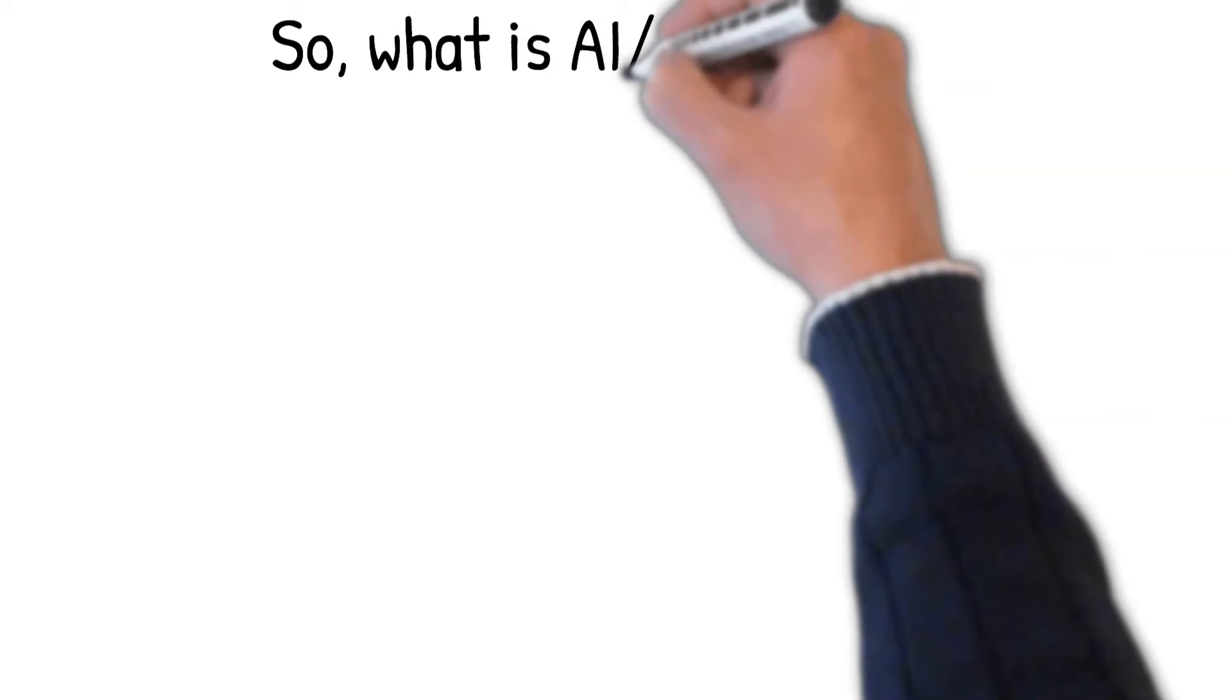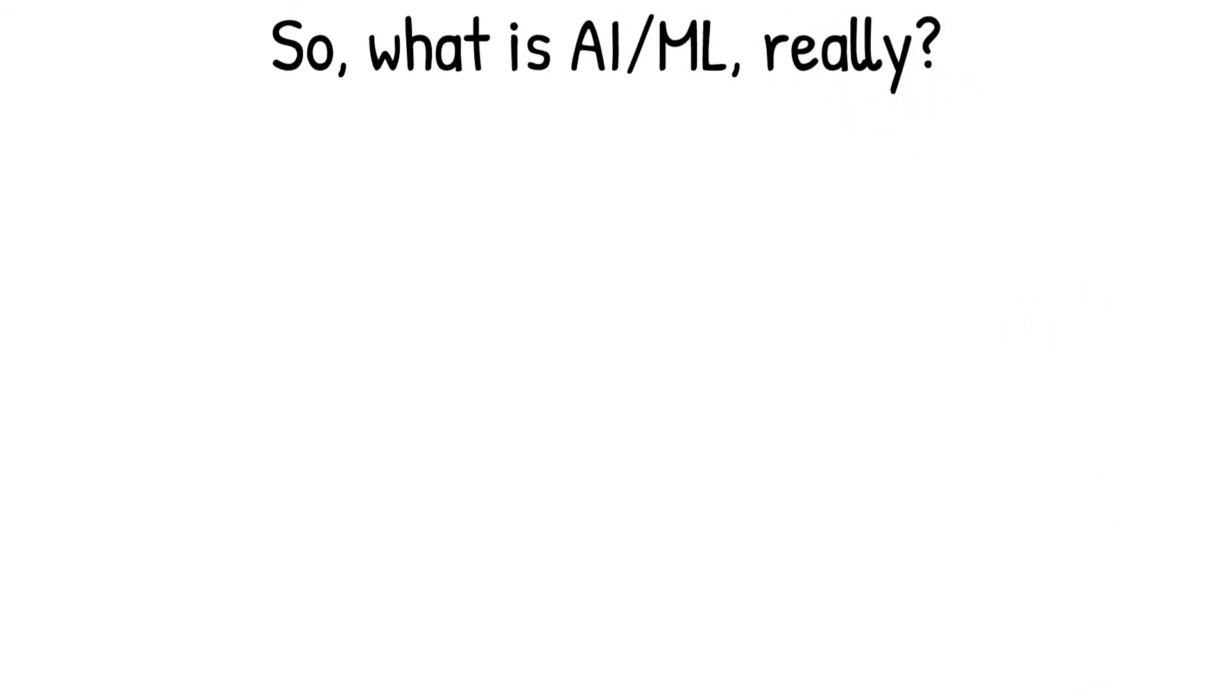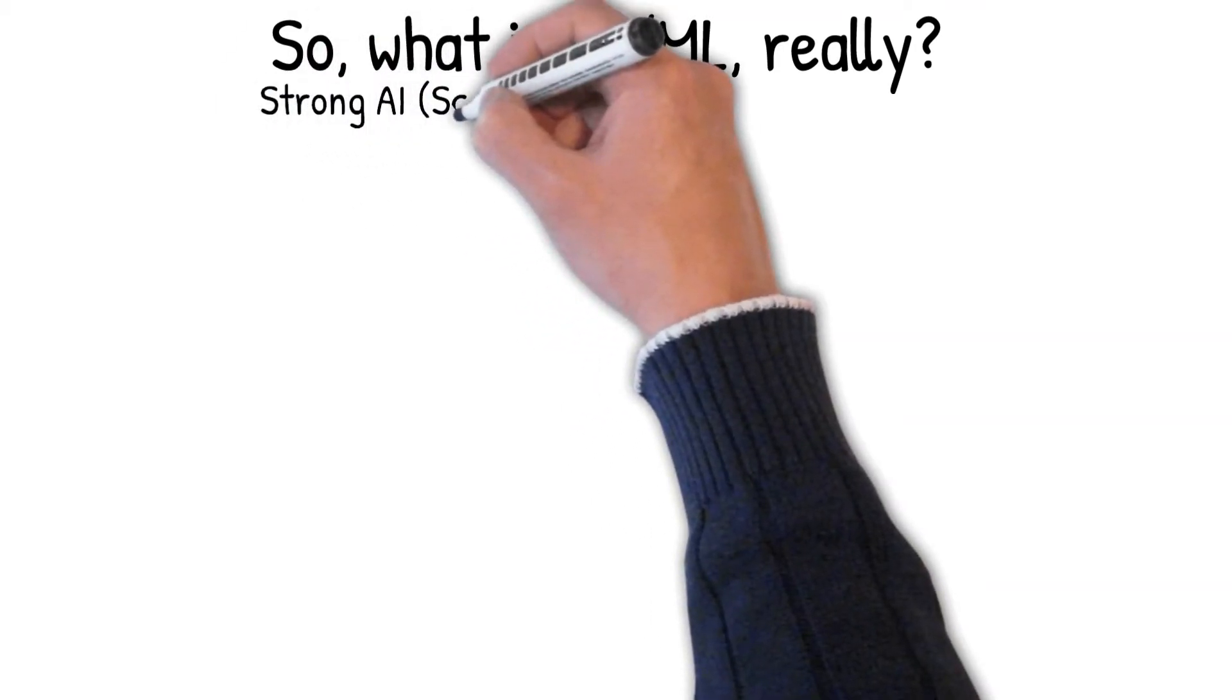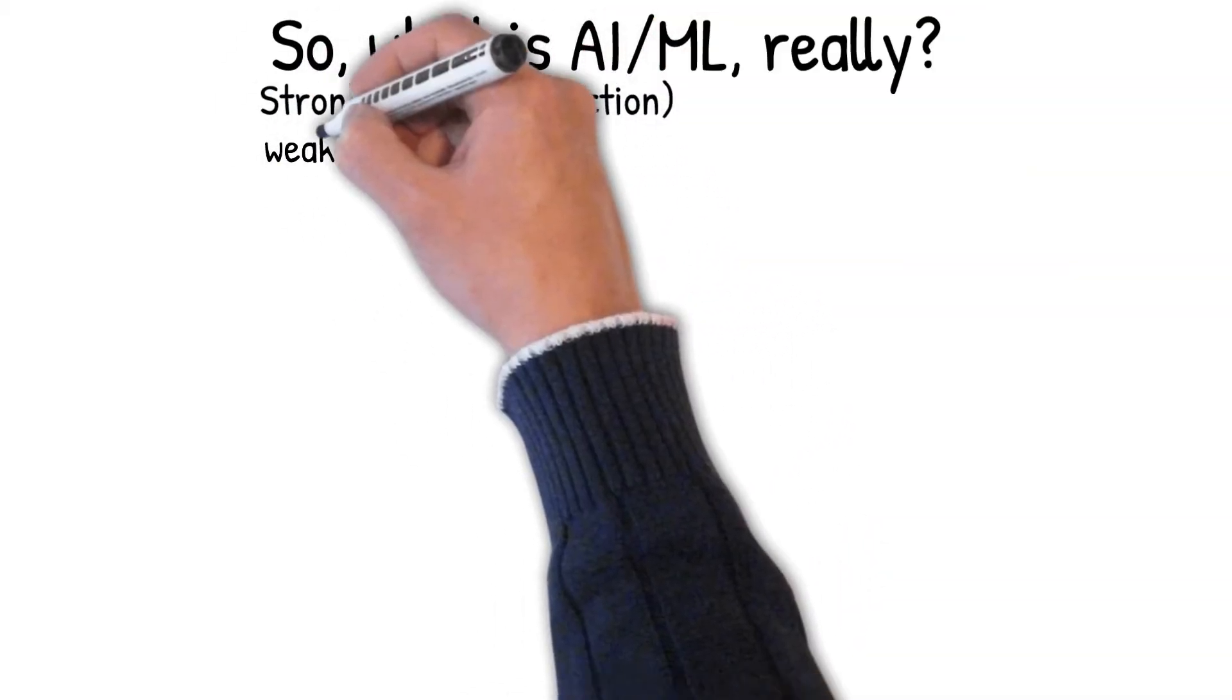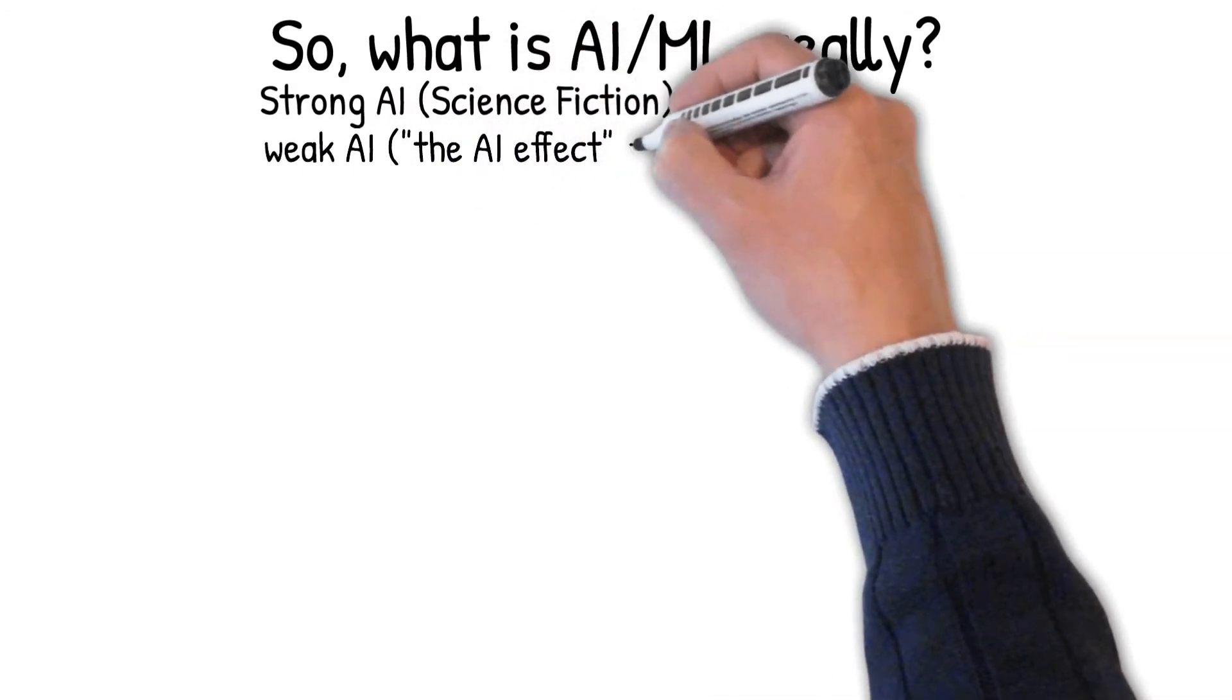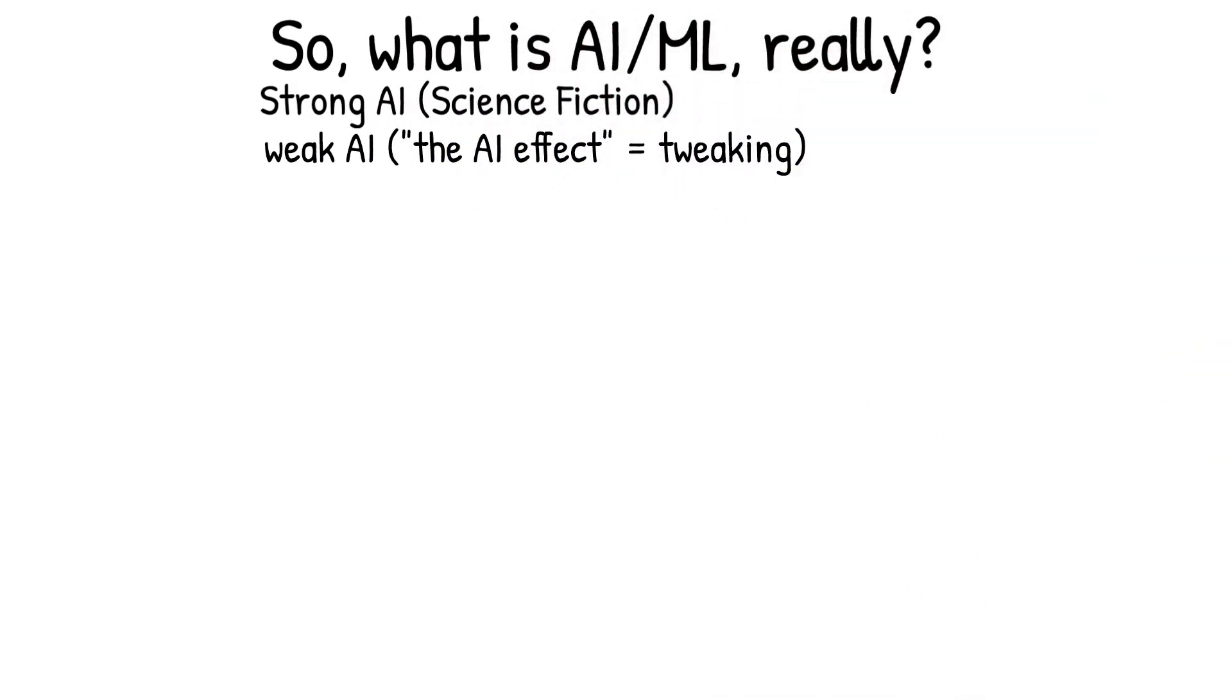Many people overhype what is considered artificial intelligence today because it gives them access to increased capital investments. So, what is artificial intelligence and machine learning, really? I like to use the distinction between strong AI and weak AI. Think of strong AI as pure science fiction, literally a machine which is a human being, versus weak AI. That's what all the people like me actually do. We only do very small little aspects of artificial intelligence, very weak.